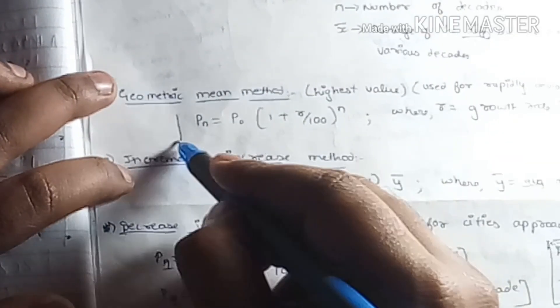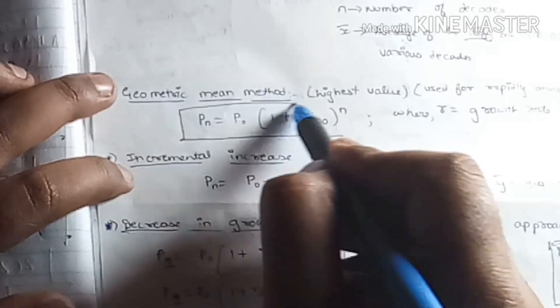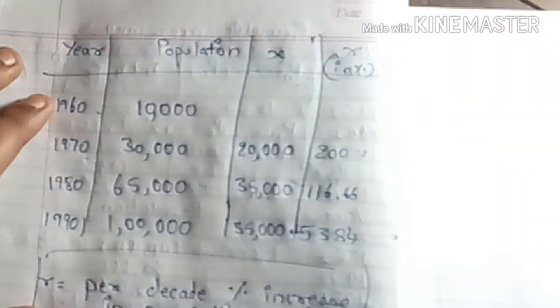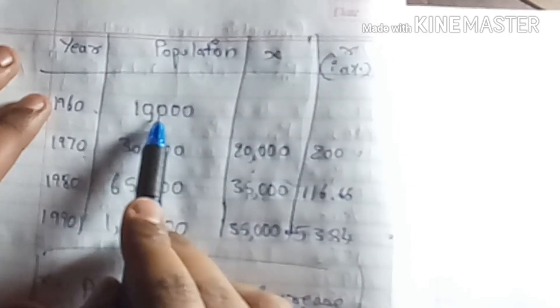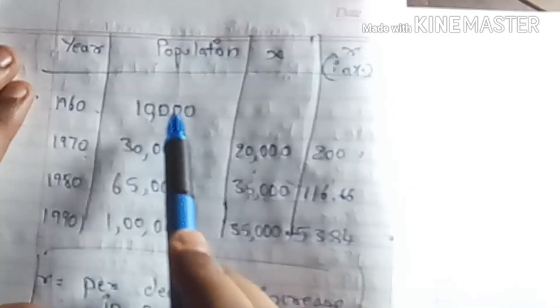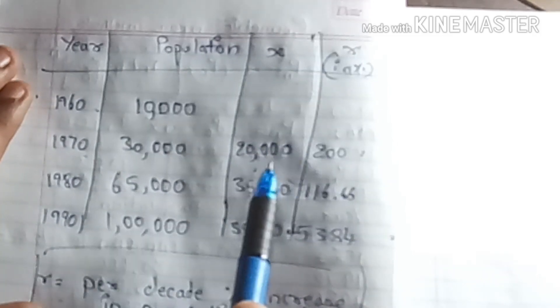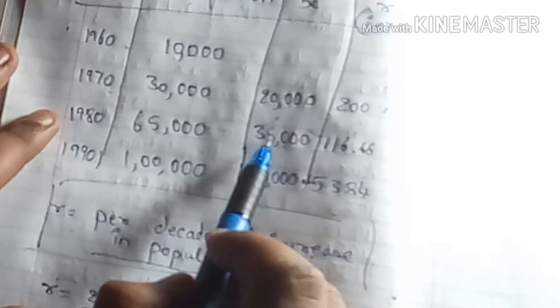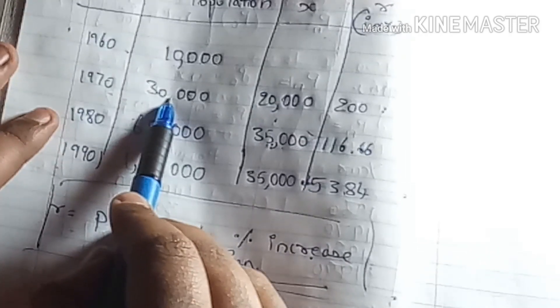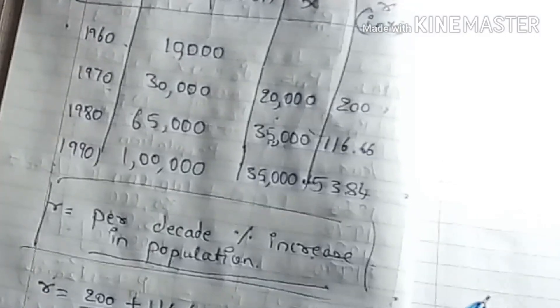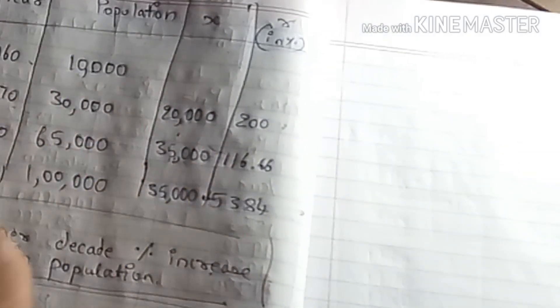This is how we solve the geometric increase method. The formula is Pn = P0 × (1 + R/100)^N. R is found by computing the difference X divided by the original population, multiplied by 100, for each decade — giving values of 20,000/10,000×100, 35,000/30,000×100, and 35,000/65,000×100 — then averaging those percentages.